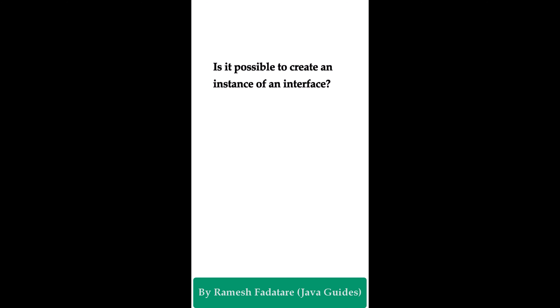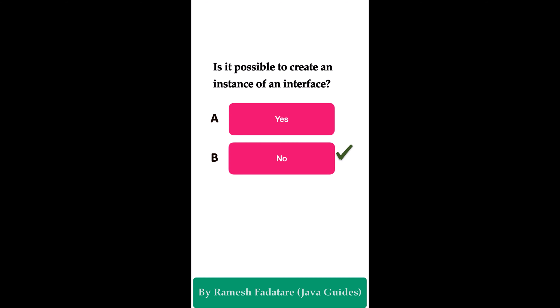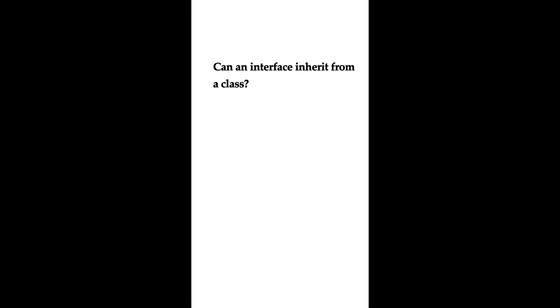Is it possible to create an instance of an interface? Option A: yes. Option B: no. The correct answer is no. We cannot instantiate or create an object of an interface directly. However, we can create a reference variable of an interface type. For example, we can create a class that implements the interface and then create an object of that class.